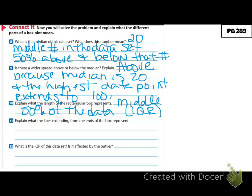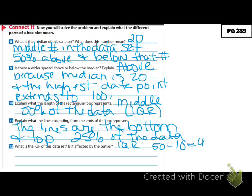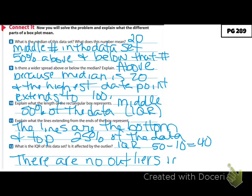Number eleven: the lines extending from the ends of the box represent the bottom and top 25% of the data. Number twelve: to find our IQR, we take our third quartile (50) minus our first quartile (10), giving us an IQR of 40. Is it affected by the outlier? There are no outliers within the IQR — remember, the IQR is the middle 50%, and outliers are off on their own to one end or the other, so they do not affect it.